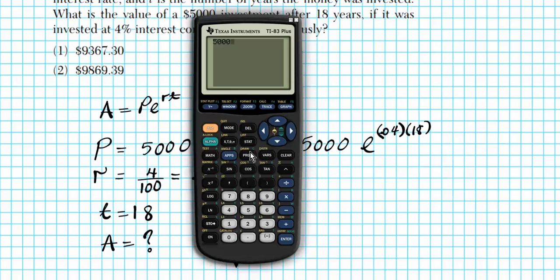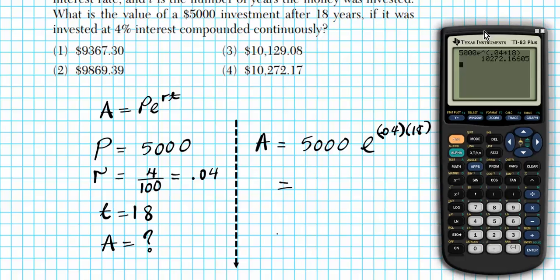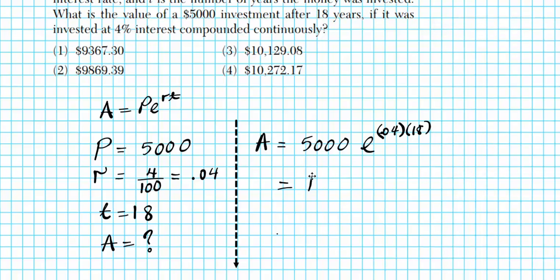Alright. So let's go ahead and enter it. So we have 5,000. And then e is next to ln. So second function ln gives you access to the e number. So raise to the 0.04 times 18. Make sure you group these two in the parentheses or else you have a grouping error. So as you can see, our answer is $10,272.17. So, you know, basically doubled your money and then some. Answer is option number four.